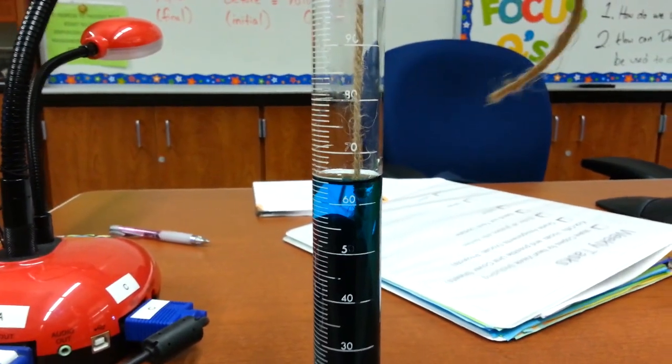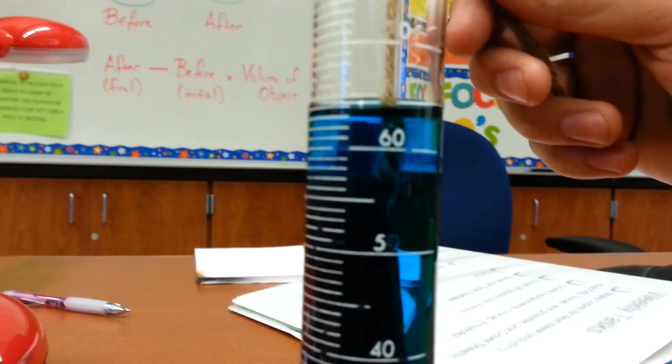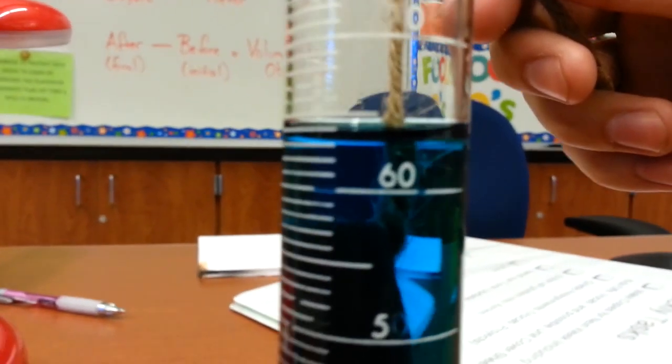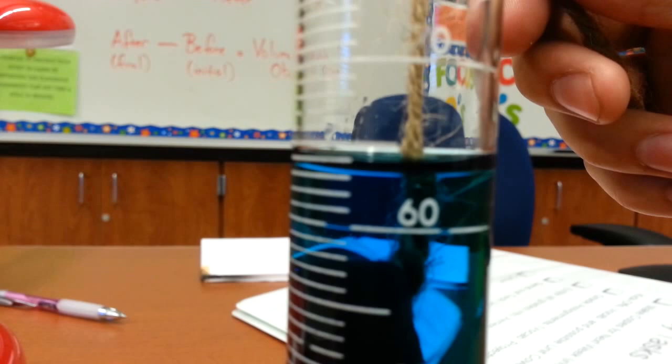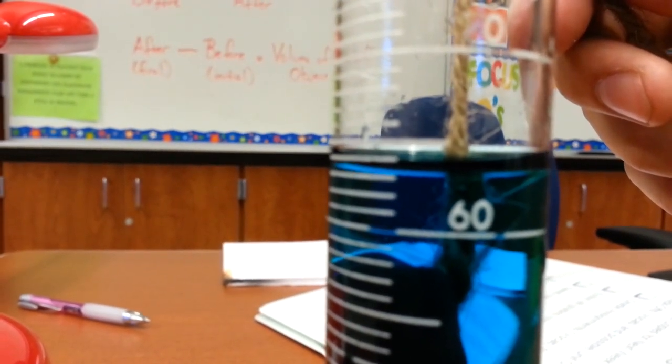And as you can see, as the object is submerged, it will raise the level of the liquid. Because the water is being pushed out of the way, it has nowhere else to go but up. So looking at that again, I'm going to measure again at the meniscus. It looks like about 63 to me. So let's go ahead and put that up there.